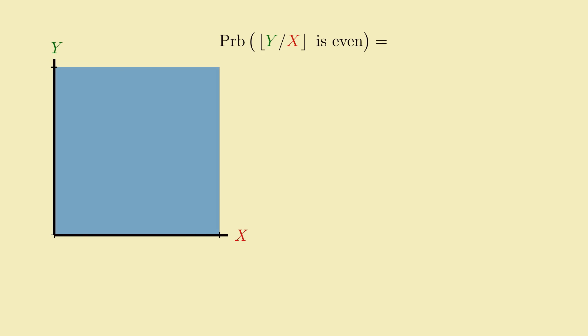To see this, we'll approach the question the same way we did before. Instead of trying to figure out the probability that y over x floors to any even number, we'll compute the probability for particular even numbers, and then sum them all up. We'll start with 0. If the ratio y over x floors to 0, that means it's less than 1, meaning y lies between 0 and x. On the unit square, this corresponds to its lower triangular half, having area, and therefore probability, 1 half.